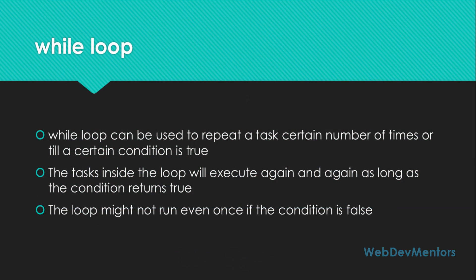We have already seen these points in our last video about the while loop. A while loop can be used to repeat a task a certain number of times, or until a certain condition is true. The task inside the loop will execute again and again as long as the condition returns true. The loop might not run even once if the condition is false.